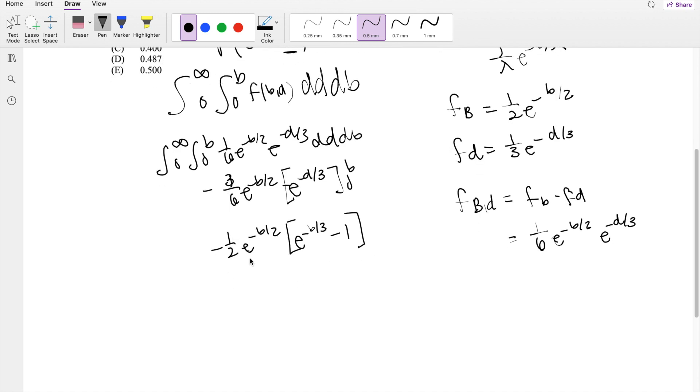I'm going to multiply this out so we don't have to worry about it later. So this is equal to negative 1/2 e to the negative 1/2 plus 1/3, that's negative 5/6 b, basically the same, we can add the exponents, minus minus, that's plus 1/2 e to the negative b over 2, db.